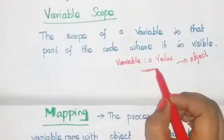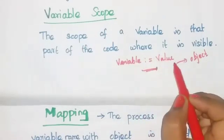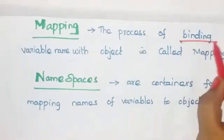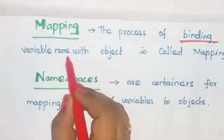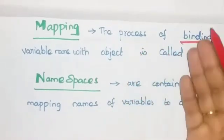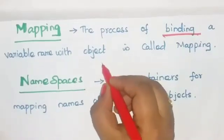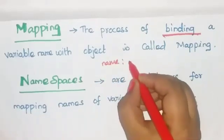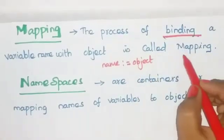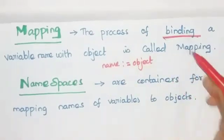Here we have written the equal-to sign. This sign is mainly used in programming languages to map the variable and object. So what do you mean by mapping? The process of binding a variable name with an object is called mapping. So we are binding a variable name with an object — that is called mapping. For mapping we use the equal-to operator.